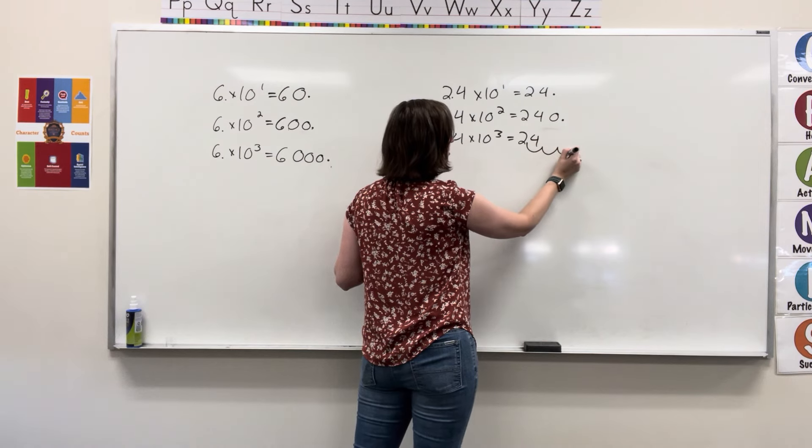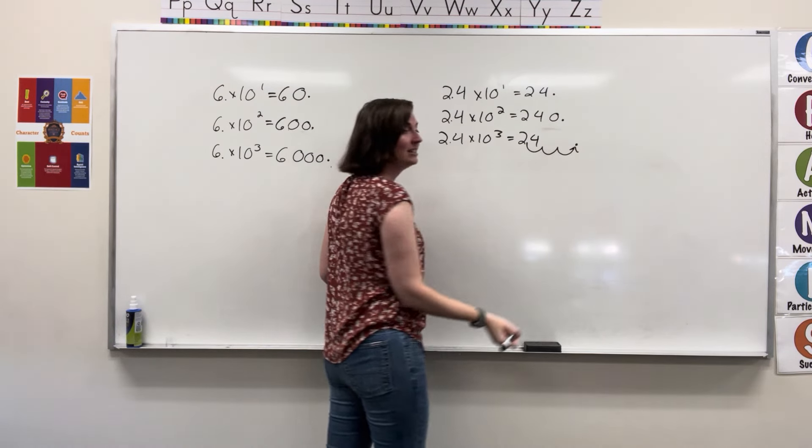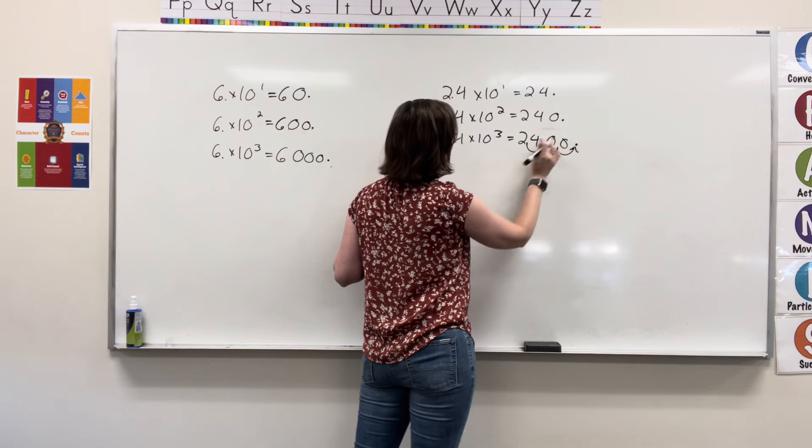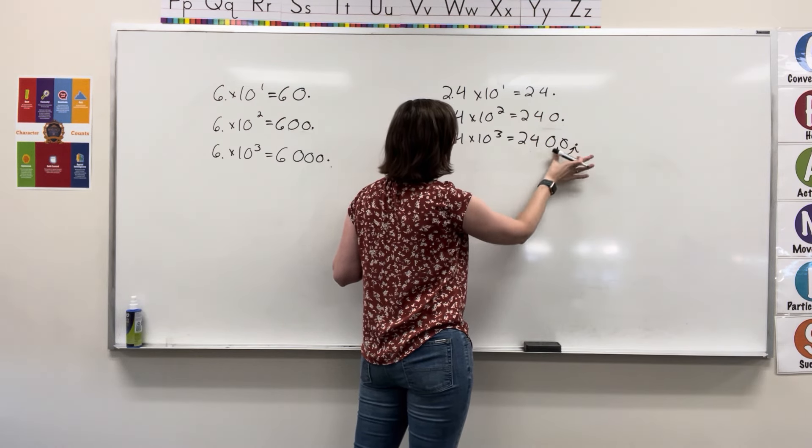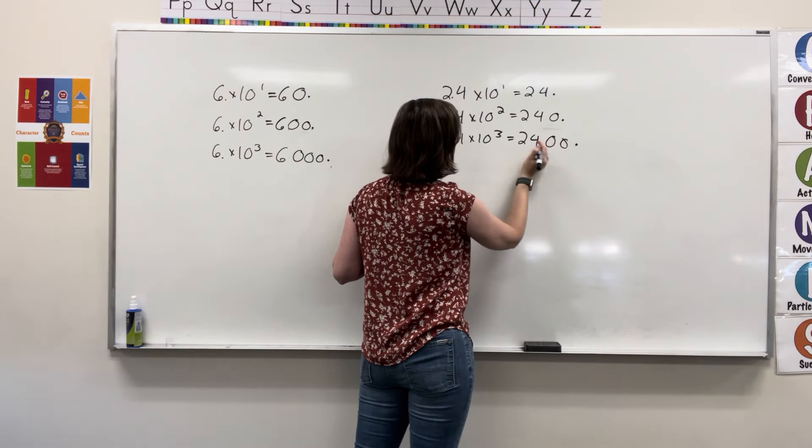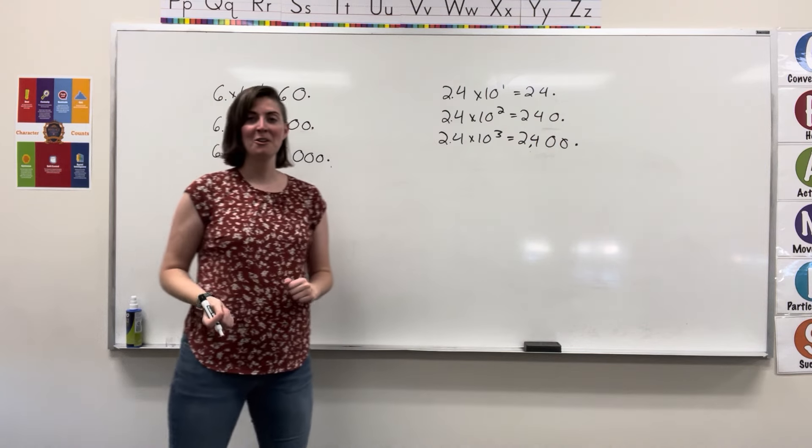One, two, three places to the right. Two blank spaces. Two zeros, fill it. Our answer for that is 2,400.